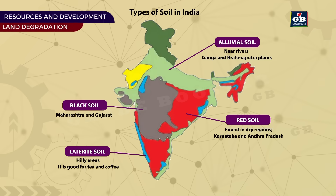Laterite soil is found in hilly areas and is good for tea and coffee plantations. Desert soil is found in Rajasthan and needs irrigation to grow crops.